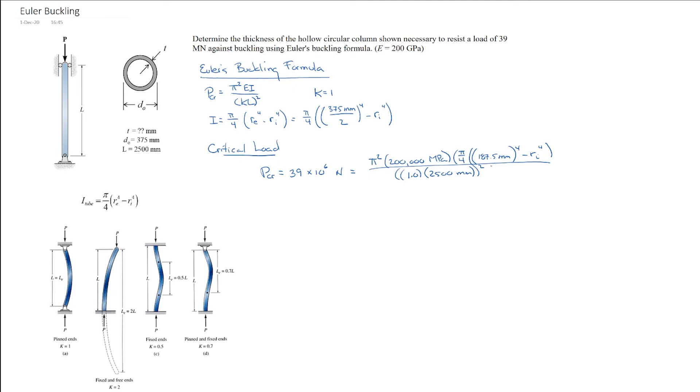So if I rearrange that and solve for our inner, I get a value of 181 millimeters. And then I can go ahead and get the actual answer to the problem by getting our thickness equals our outer minus our inner. That's 187.5 millimeters minus 181 millimeters and gives us an answer of 6.5 millimeters.